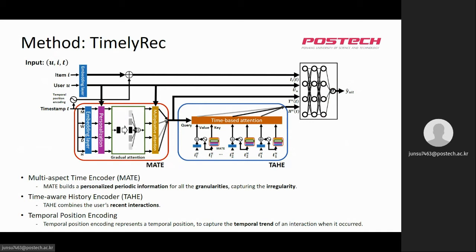TimelyRec takes a user, an item, and a target timestamp, and predicts the probability that the user will like the item at that timestamp. TimelyRec consists of two encoders — multi-aspect time encoder and time-aware history encoder — and additionally uses temporal position encoding.